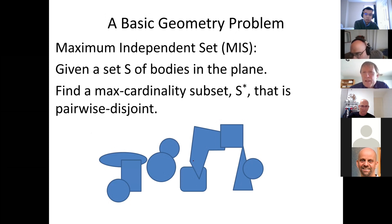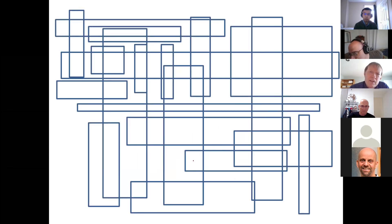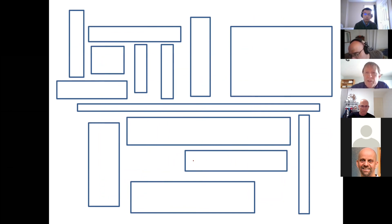It's a basic geometry problem: given a set of bodies in the plane — today's talk is exclusively in two dimensions — find a maximum cardinality subset that's pairwise disjoint. The particular setting is maximum independent set for axis-aligned rectangles. The input looks like a collection of rectangles, and the output is a large collection of interior disjoint elements from the input set.